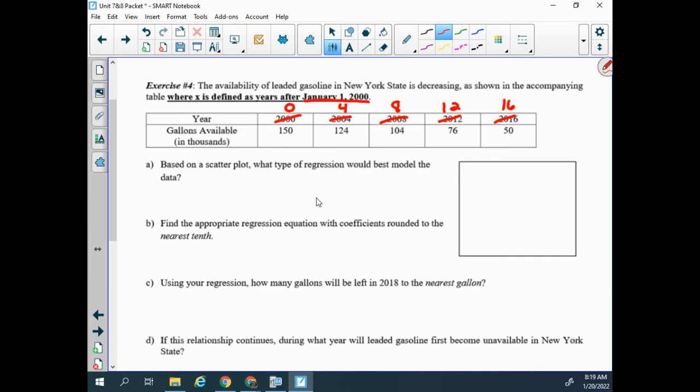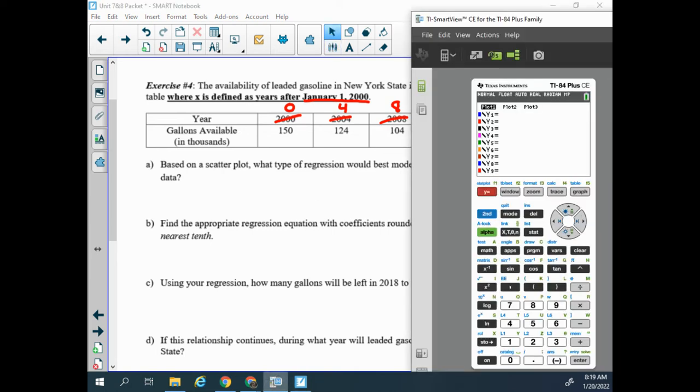Now I already have this data typed into my table so we'll just look at that. So it's typed into my table. I'm going to go first, it says based on a scatterplot what type of regression would best model the data.